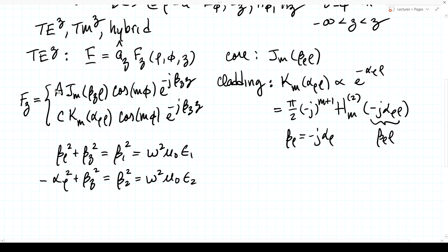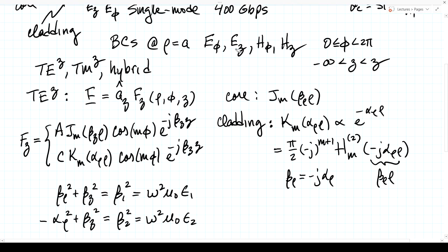So we have one unknown (beta-z or equivalently beta-rho or alpha-rho) plus two amplitude coefficients, giving three unknowns. With three independent equations and three unknowns, the only solution would be the trivial one: A equals C equals zero. So we actually want two equations and two unknowns — we fix A equal to 1, then solve for C and beta-z. We now apply differential operators to get E-phi, E-z, H-phi, H-z and require continuity at the boundary.